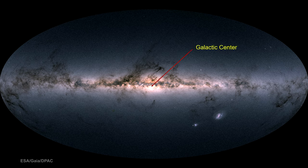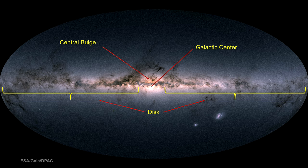The galaxy has a center with a central bulge, a disk of rotating stars and dust, and a halo without dust clouds, peppered with globular star clusters.